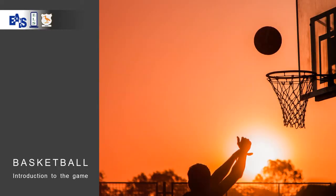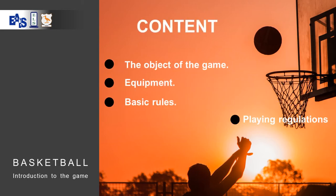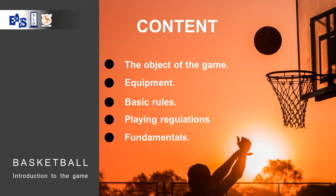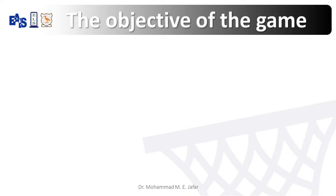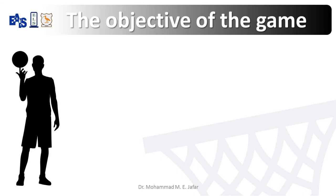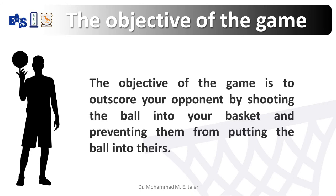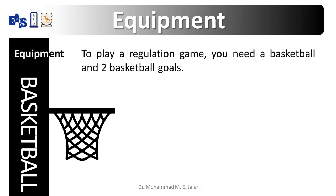Good morning dear students, today we're going to learn some information about basketball. Basketball is played with two teams, each team consists of five players on the court at a time. The objective of the game is to outscore your opponent by shooting the ball into your basket and preventing them from putting the ball into theirs. The ball can be advanced on the floor with hands only, either by dribbling or passing to teammates.